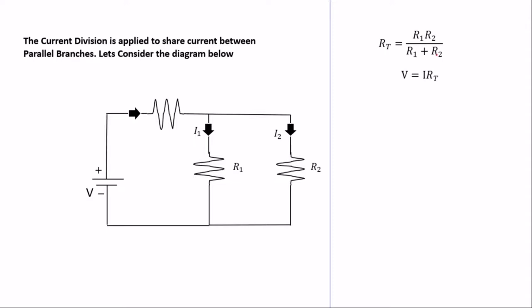From Ohm's Law, voltage V equals current i times total resistance. Since the resistors are in parallel, V = i × (R1 × R2) / (R1 + R2).